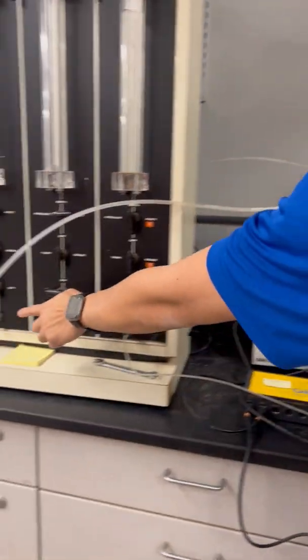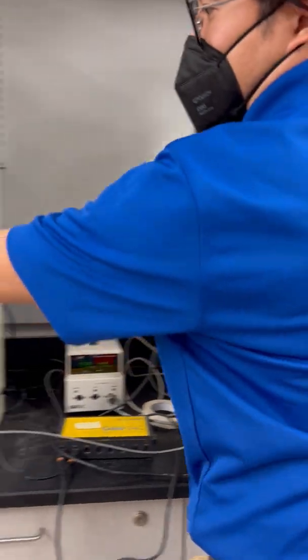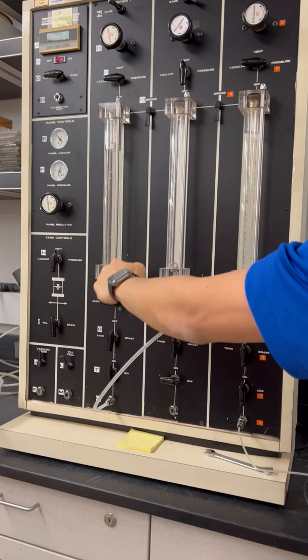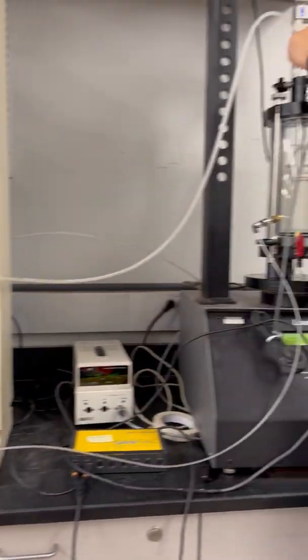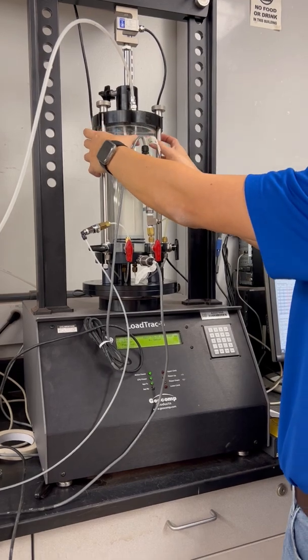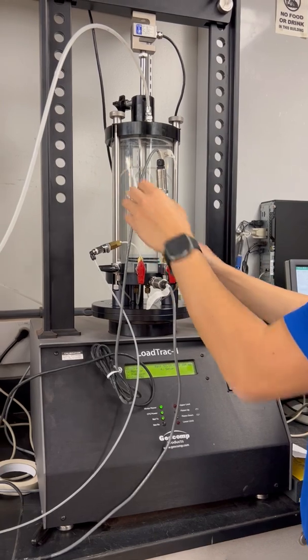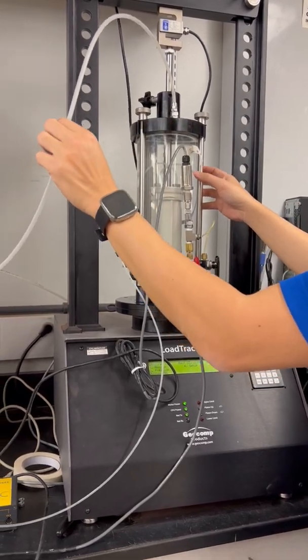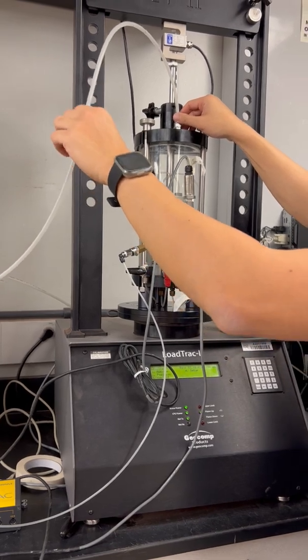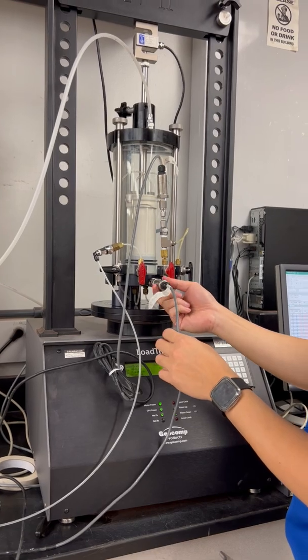You see this water tube here connects to this panel position. This gives you the cell pressure, so this cell pressure supply goes through here. You see the whole system works, goes here inside the cell but outside the soil sample, outside the membrane. The whole thing is pressurized by this water tube, being picked up by the sensor of this cell pressure sensor.